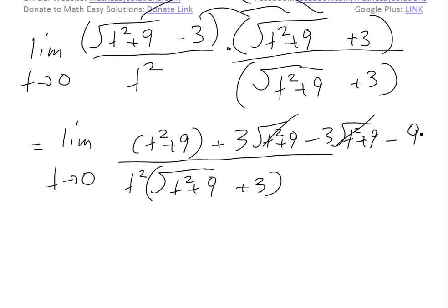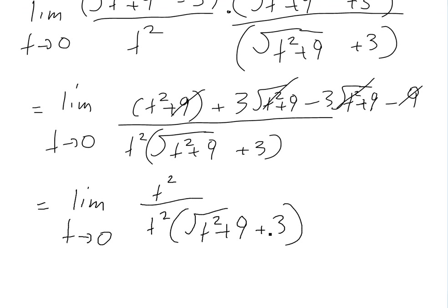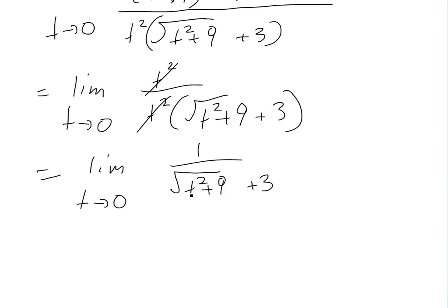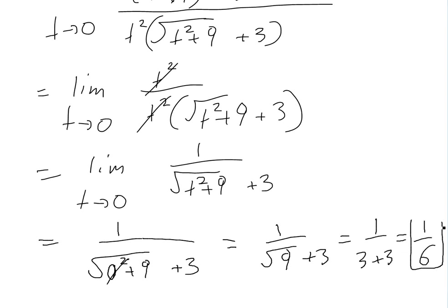Now t squared divided by t squared cancels — since t is not actually equal to zero, just approaching it, this cancellation is valid. We're left with one over (square root of t squared plus nine plus three). Substituting t equals zero: zero squared is zero, so we get one over (square root of nine plus three), which is one over (three plus three), equal to one over six. That's our final answer.